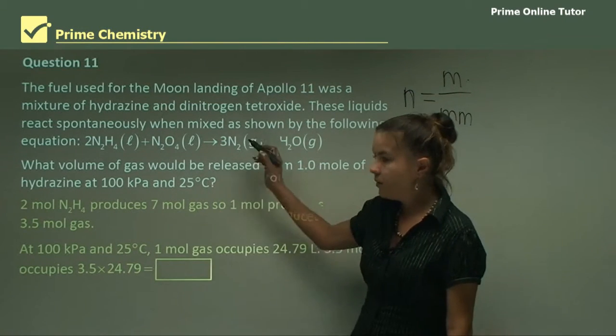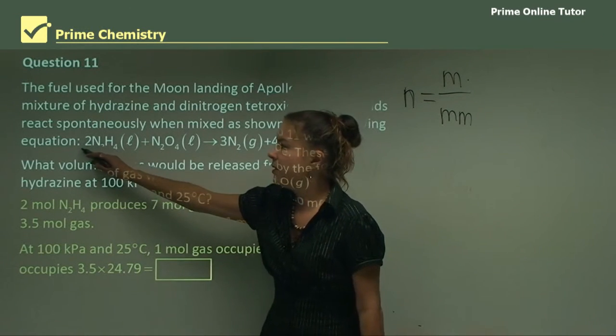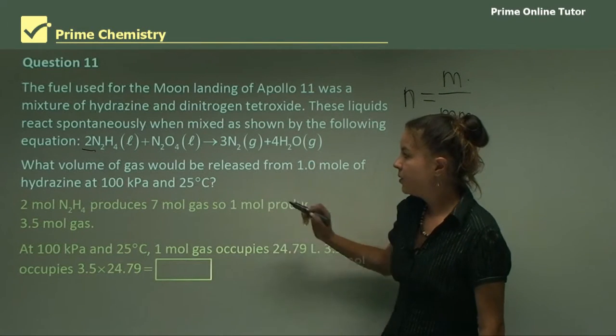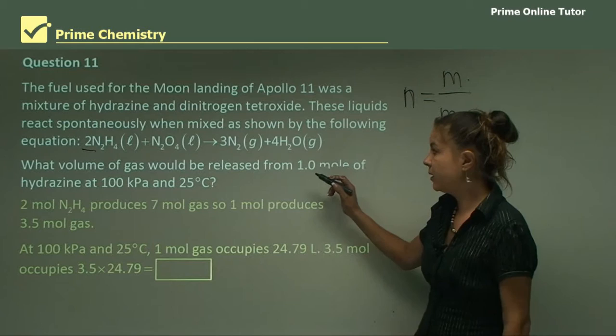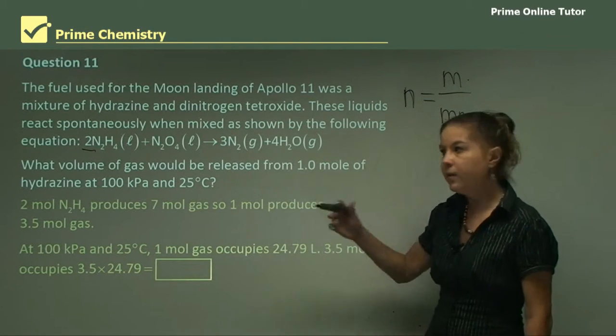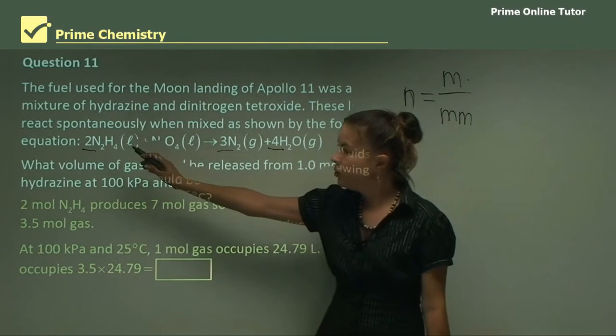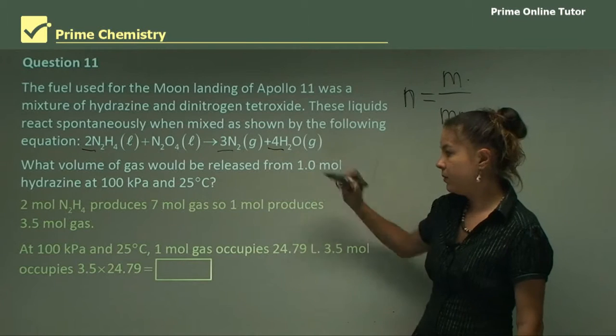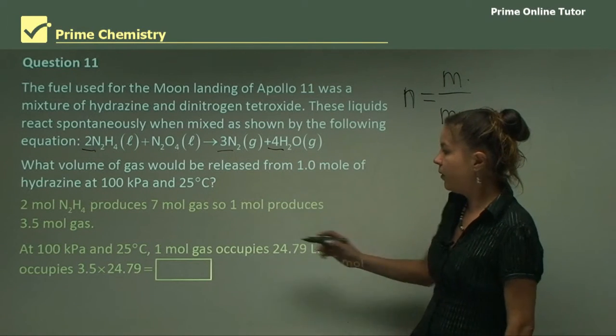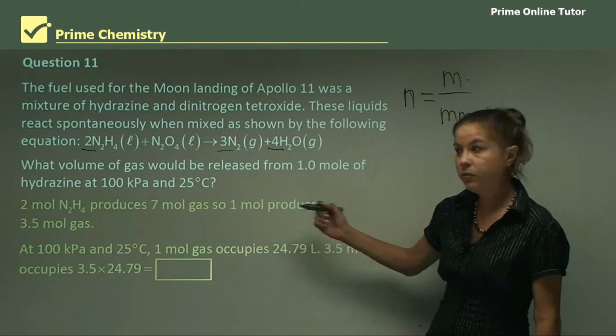What we find from this equation is that two moles of hydrazine, as you can see here from the two, produces seven moles of gas. So what we have to do with this particular equation is look at the moles of gas altogether on the right side. So we add three plus four, so we find that two moles goes to seven moles. So then if we break it down to simplify, one mole will produce 3.5 moles. So we just divide by two there.